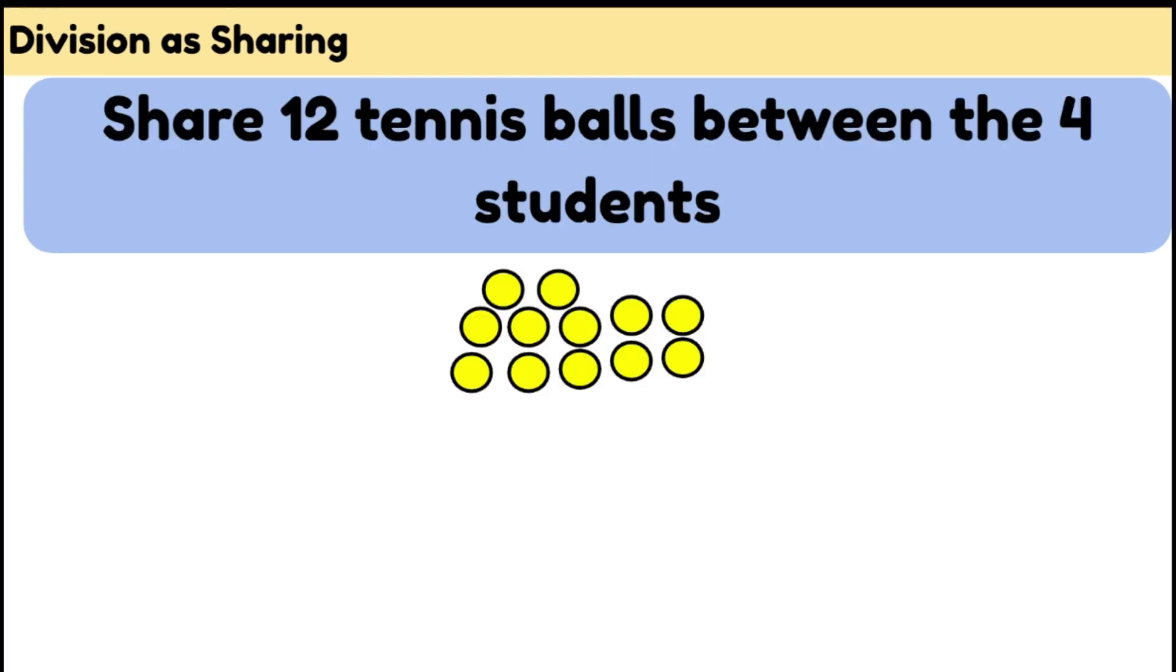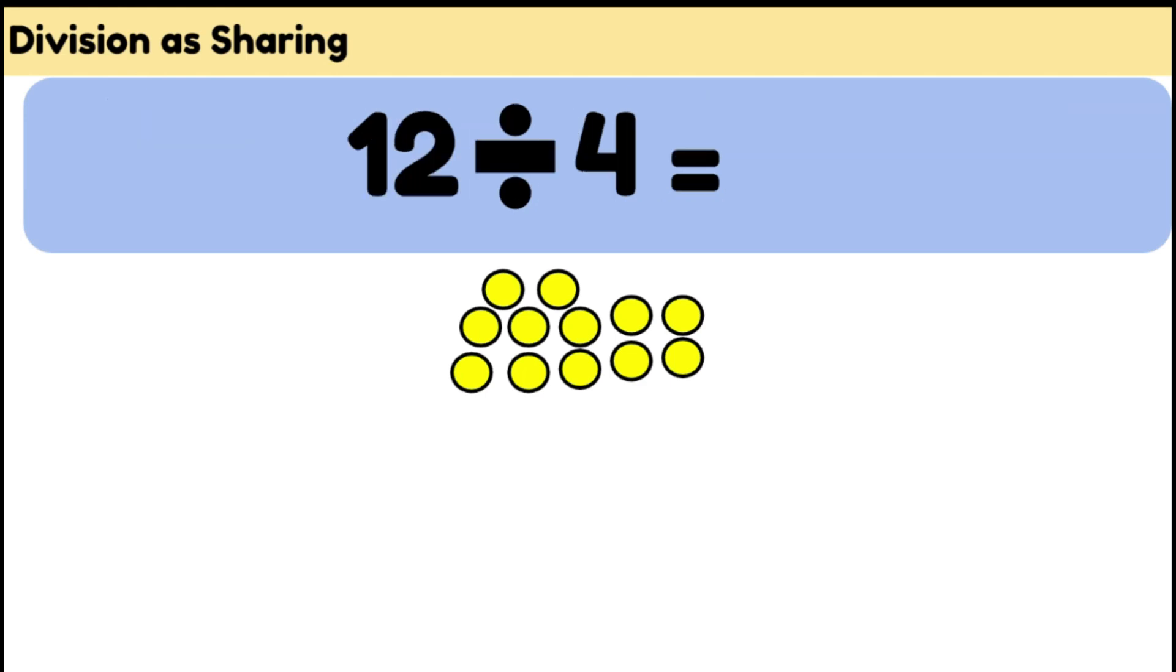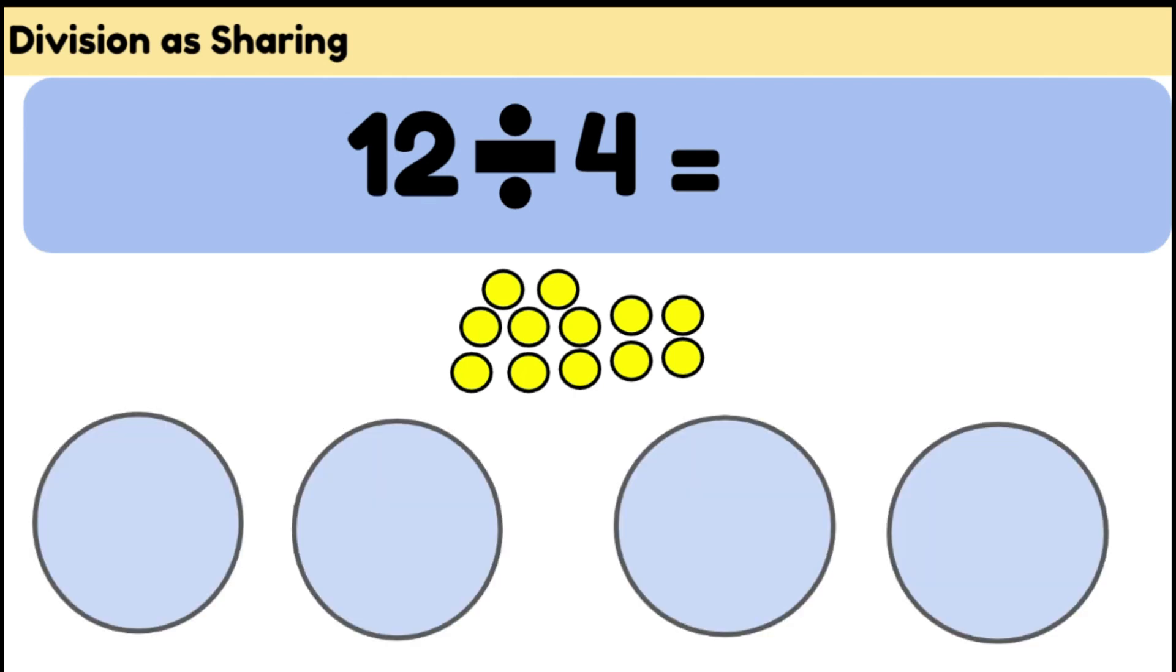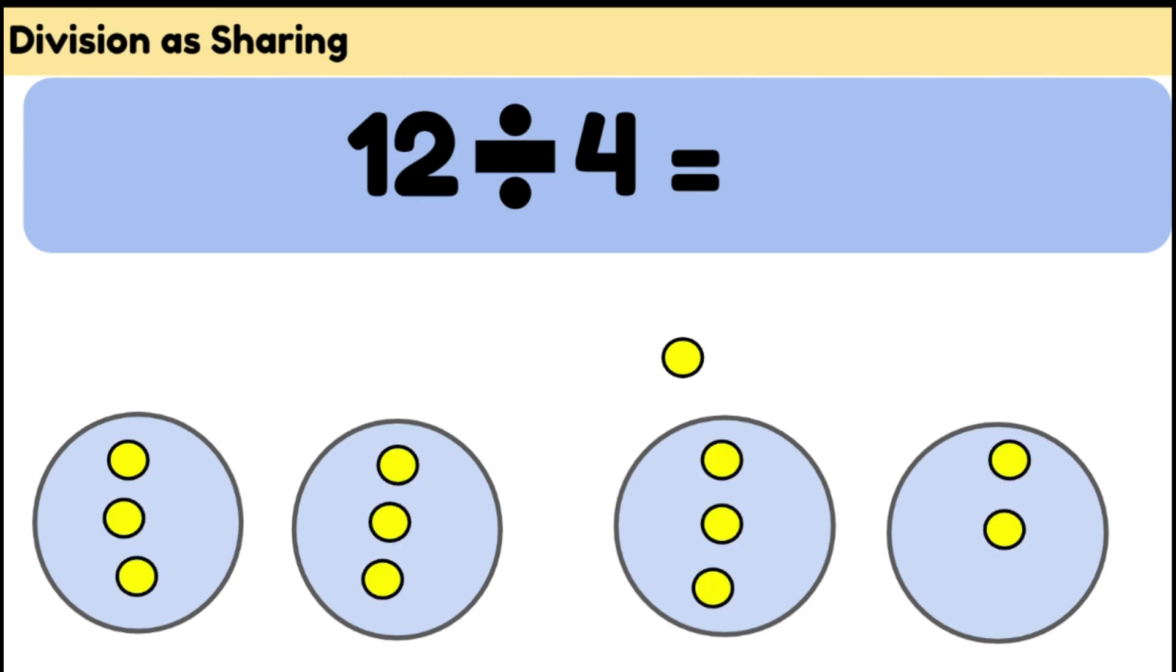Let's try a word problem now. We're going to share 12 tennis balls between four students. This is what our number sentence is going to look like: 12 divided by 4. We're going to create our groups and we're going to share our 12 tennis balls between those four groups, making sure we put an equal number in each. Now we're going to count how many in each group and so our answer is three.